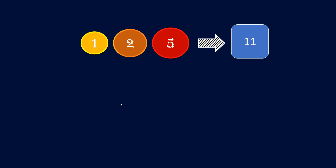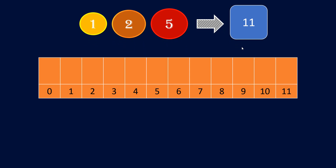Let's take the first example where we are given 3 denominations: 1, 2 and 5, and we need to make 11. Initially we will take a DP array of size amount plus 1 so that our last index equals the amount. We initialize every position in the DP array with amount plus 1, and set the 0th position to 0. Then we start iterating over our coins to check how many coins are required for each particular amount.